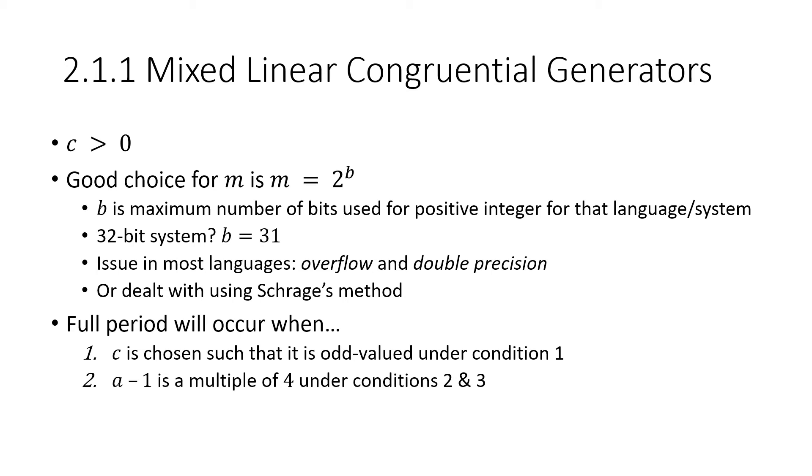A full period will occur when C is chosen such that it is an odd value under condition one, or number theory one, and A minus one is a multiple of four under the conditions we just talked about.